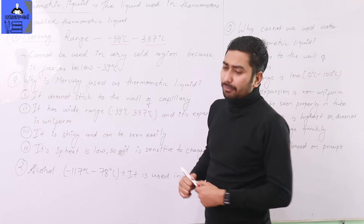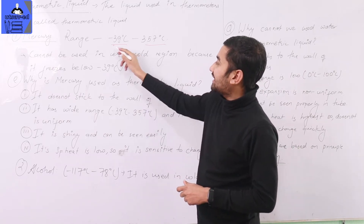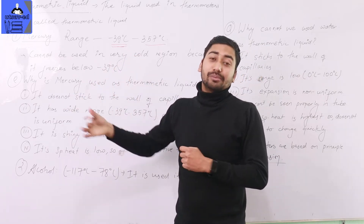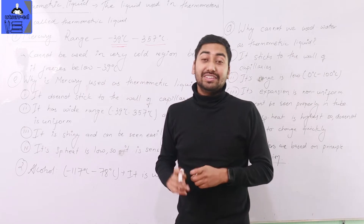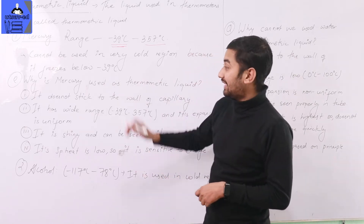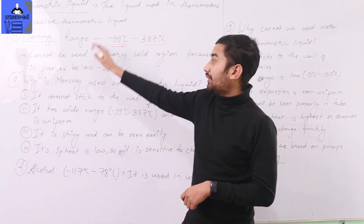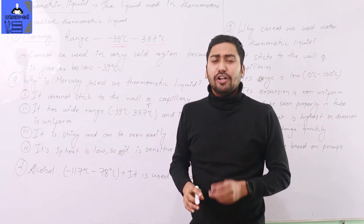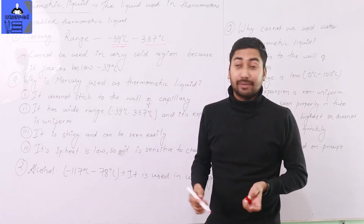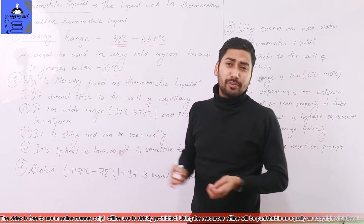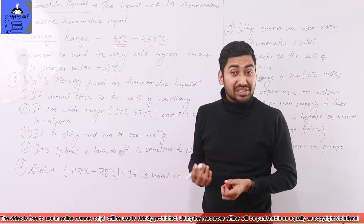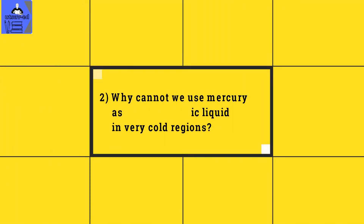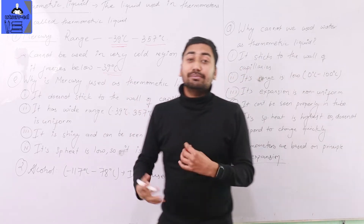Mercury's freezing point is minus 39 degrees Celsius. This is a low temperature, so mercury cannot be used in very cold regions where temperatures drop below minus 39 degrees Celsius, because at that point mercury solidifies.